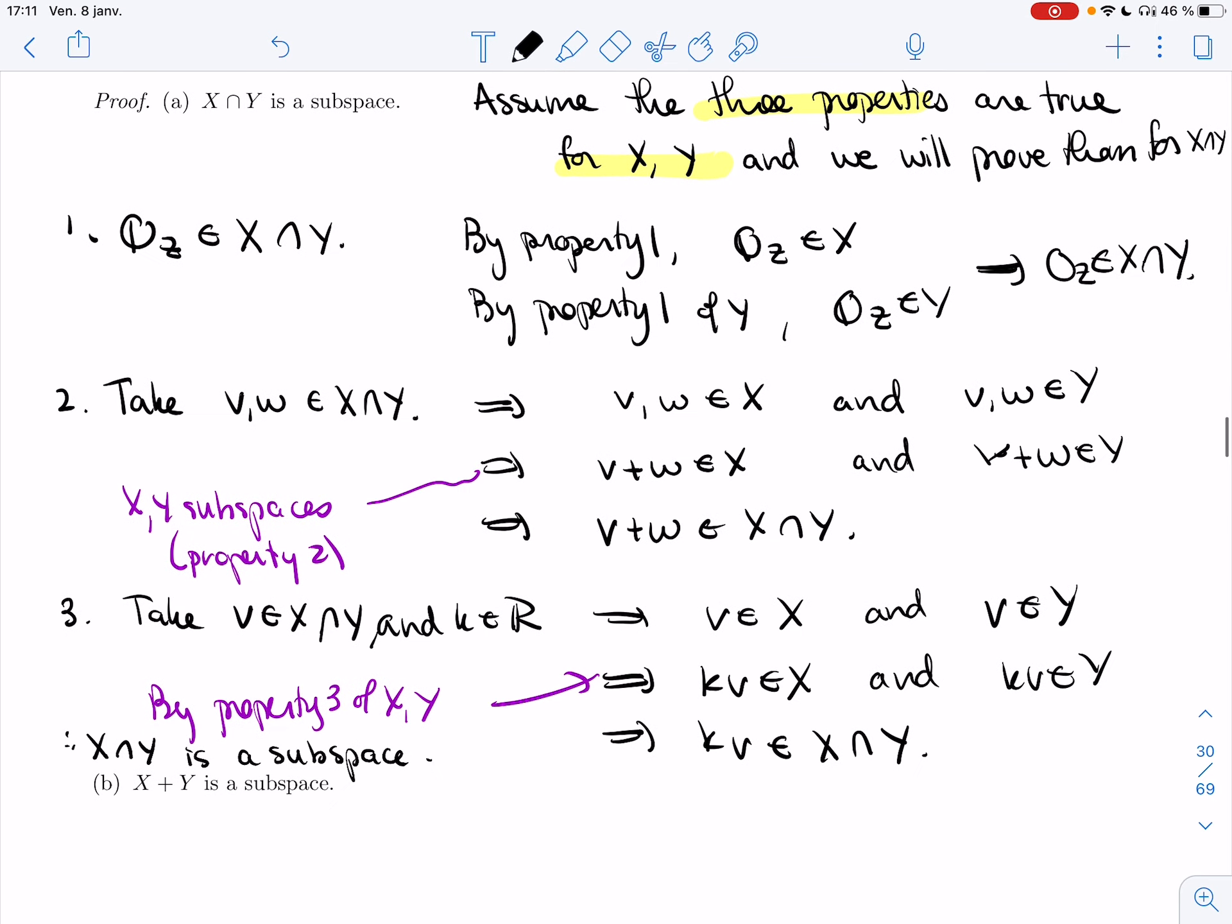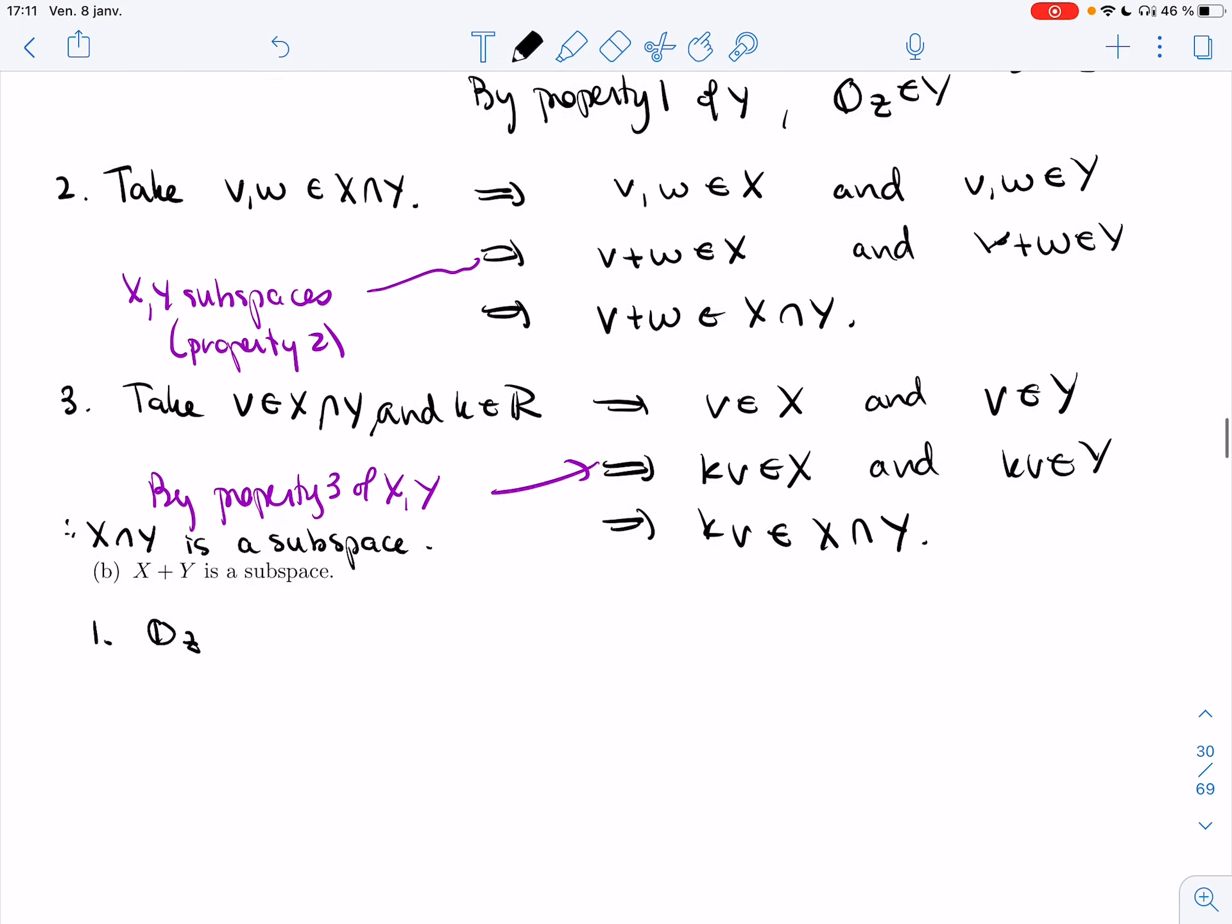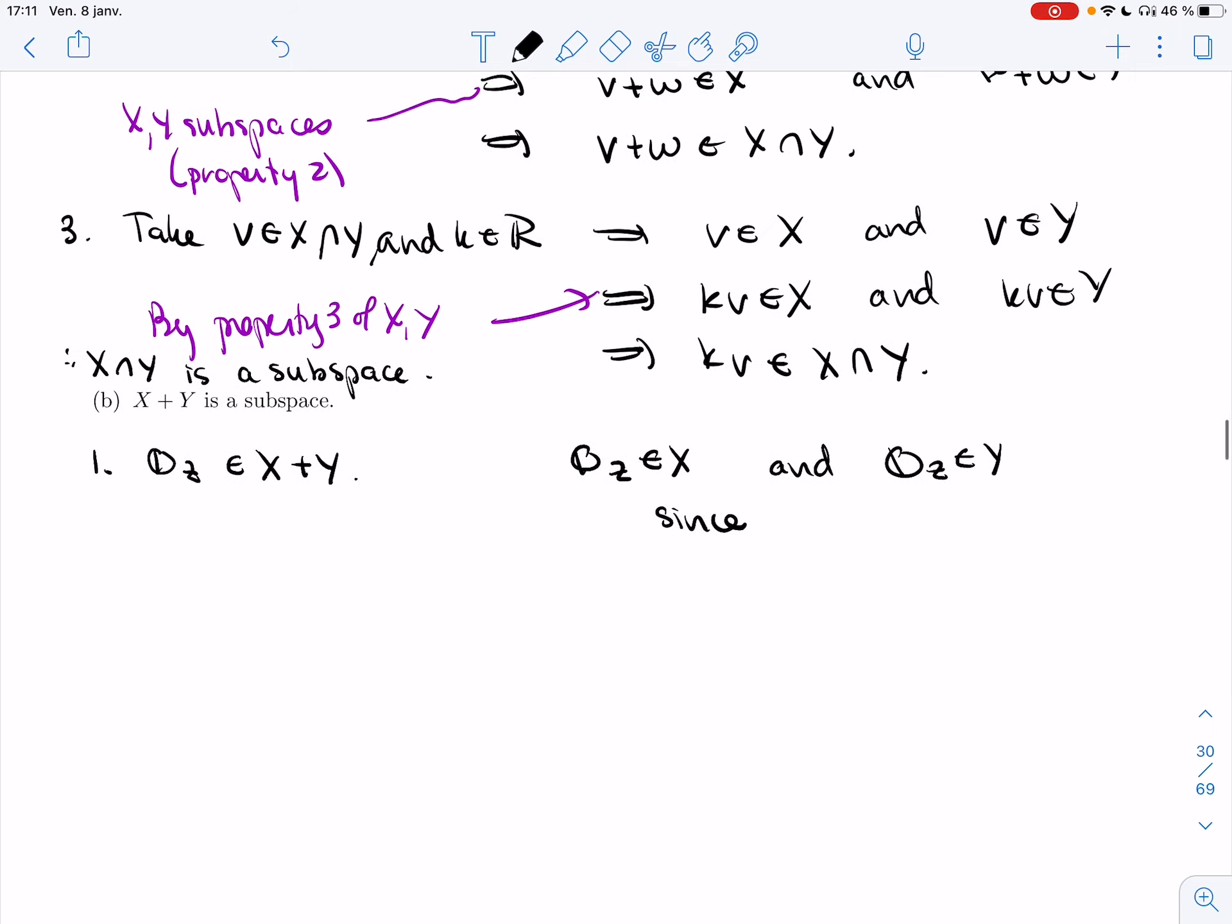So again, I'm going to assume that X and Y are subspaces, and I'm going to prove the three properties. So I need to write the zero as something in X plus something in Y. I know that the zero is in X, and I know that the zero is in Y, since X and Y are subspaces of Z.